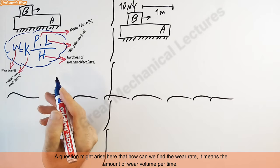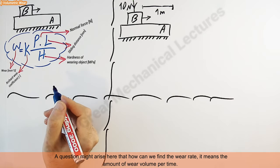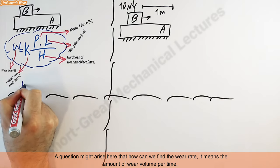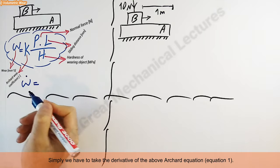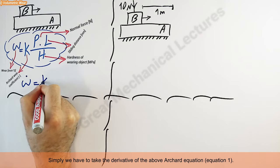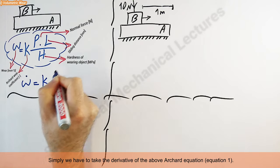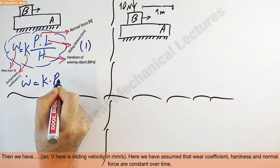A question might arise here: how can we find the wear rate? It means the amount of wear volume per time. Simply, we have to take the derivative of the above equation, equation 1, then we have...